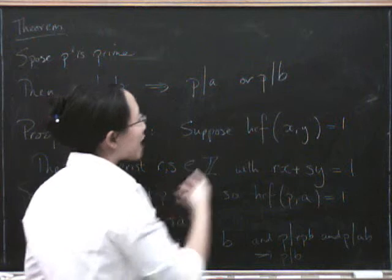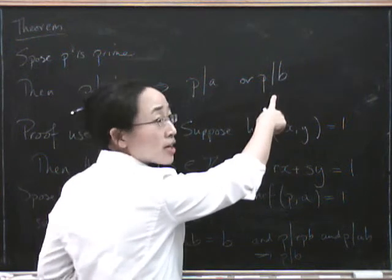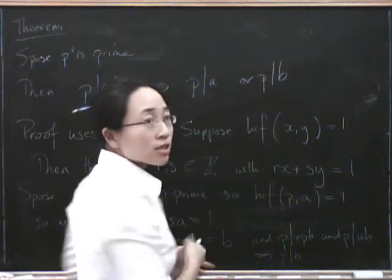So if, on the other hand, we knew that p did not divide b, we would have to conclude that p divided a.